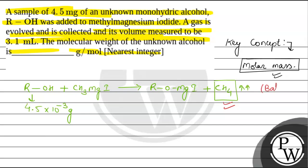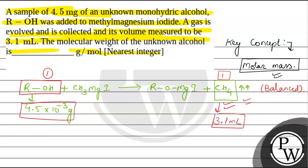Checking this equation, it is already a balanced chemical equation. So one mole of the unknown monohydric alcohol produces one mole of methane gas. The volume of this gas produced equals 3.1 mL, using 4.5 × 10⁻³ grams of the substance.